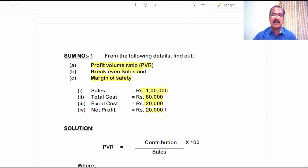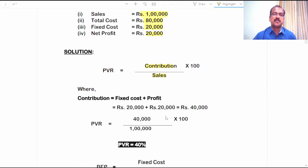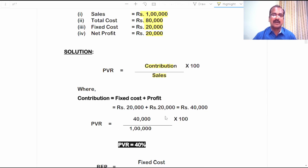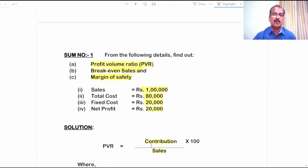What is the formula for calculating profit volume ratio in the normal situation? Contribution divided by sales into 100. We know sales amounted 1 lakh rupees is given in the problem, so we have to find out only the contribution. Since fixed cost and net profits are directly given, if you add these two figures you will get the total contribution. Therefore contribution equals fixed cost plus profit, it comes to 40,000 rupees. Now PVR is equal to 40,000 rupees divided by 1 lakh rupees into 100, giving a profit volume ratio of 40%.